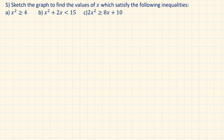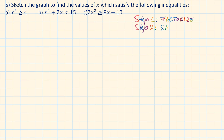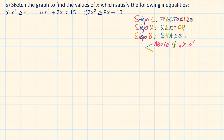Question 5: sketch the graph to find the values of x which satisfy the following inequalities. Here are steps to follow when solving quadratic inequalities. Step 1: factorize. Step 2: sketch the graph. Step 3: shade in the region — shade above the graph if we have the symbol larger than 0, and shade below the graph if we have less than 0. Step 4: write out the solution as inequalities.